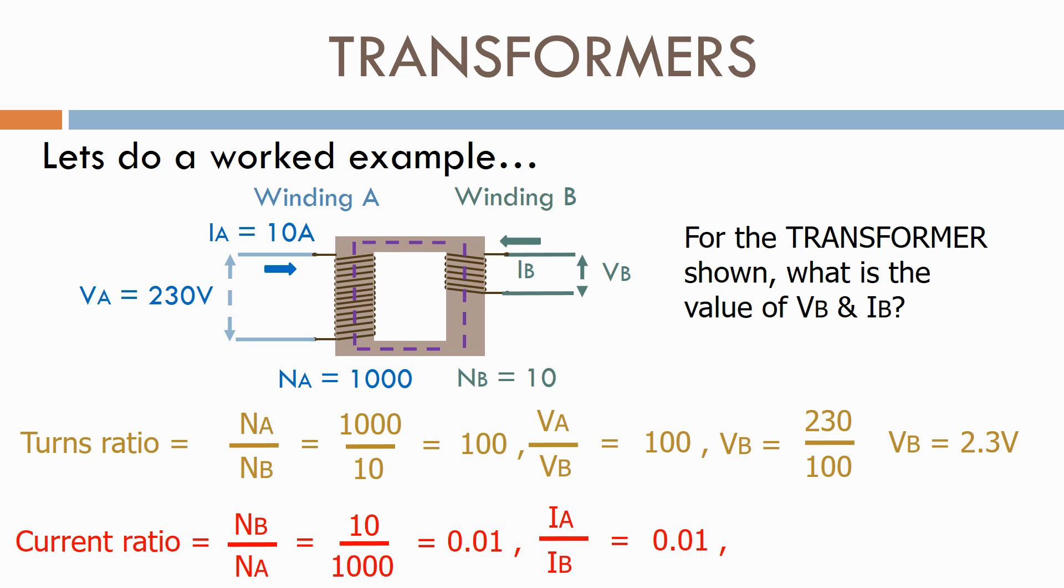Therefore, IA over IB equals 0.01. IB equals 10, which is the current on winding A, divided by 0.01. Therefore, IB equals 1000 amps.